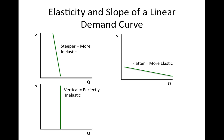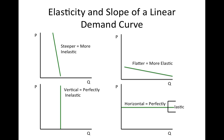In the extreme, a vertical demand curve is perfectly inelastic, which means that no matter what the price, quantity demanded doesn't change. You can remember this by remembering that the vertical demand curve forms the I in the word inelastic. A horizontal demand curve is perfectly elastic, which means that at the price that corresponds to the vertical intercept, a producer can sell as much as they want. If they raise the price, they'll go from being able to sell as much as they want to selling nothing instantaneously. You can remember that horizontal demand curves are perfectly elastic by remembering that the horizontal demand curve forms part of the E in the word elastic.